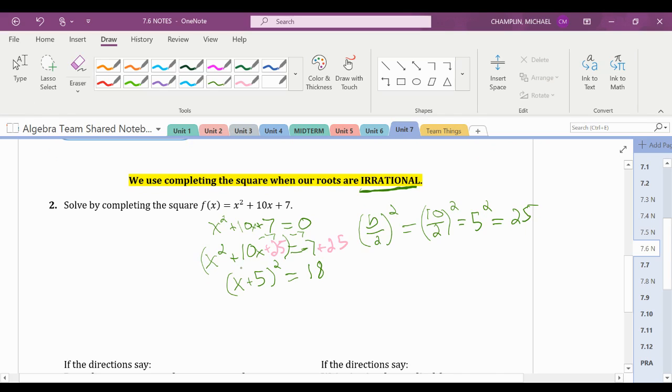Perform the inverse operation, which is taking the square of each side. This makes my left side x plus 5 equals plus or minus the square root of 18. And 18 is irrational.